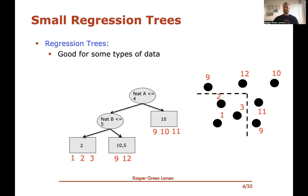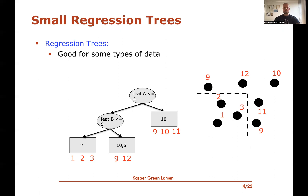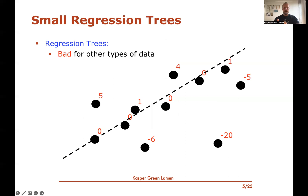For regression with a least squared loss, what you should return in the leaves is the mean value of all the labels of the points that end there. For instance, this right child here has labels 9, 10, and 11, so you would return the mean, which is 10. And over here in the left leaf, the mean of 2 and 3 would be 2.5.